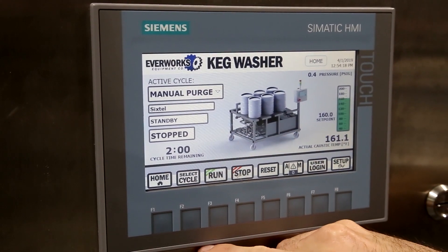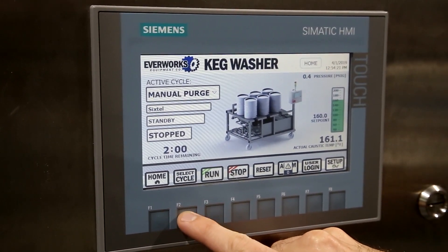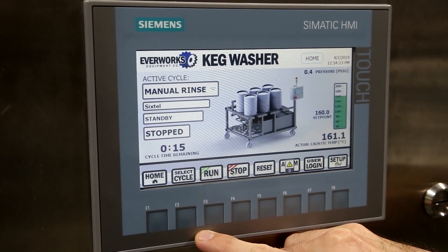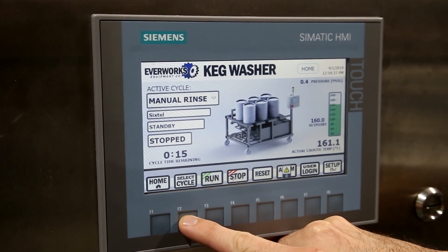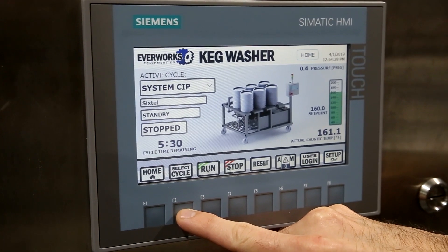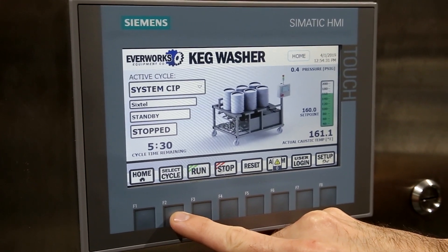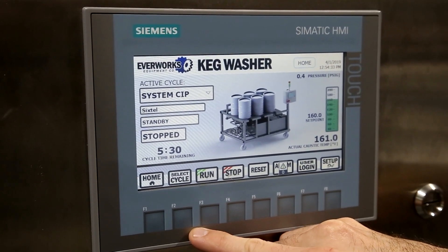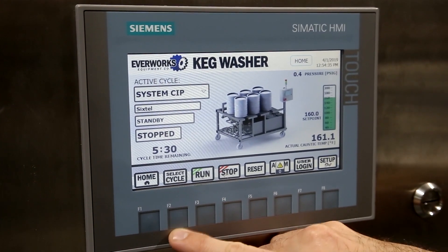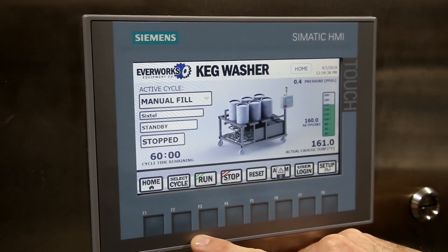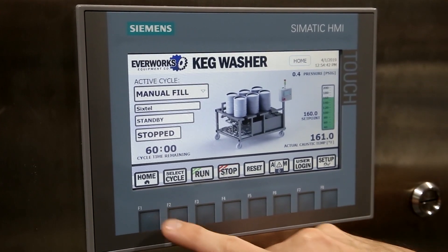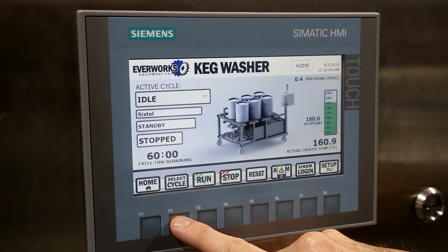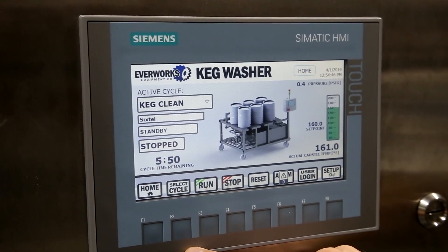A manual purge for full kegs you get back. A manual rinse you can alternate with a manual purge cycle for foam bombs. System CIP where you can place the keg couplers directly in your caustic solution tank and do a full system CIP with recycle. A manual fill cycle where you hook up right to your bright tank and fill kegs right side up. Finally our keg clean cycle.